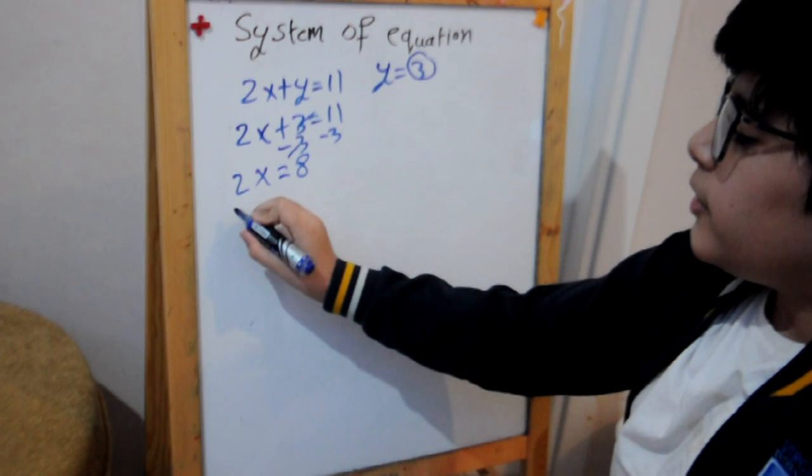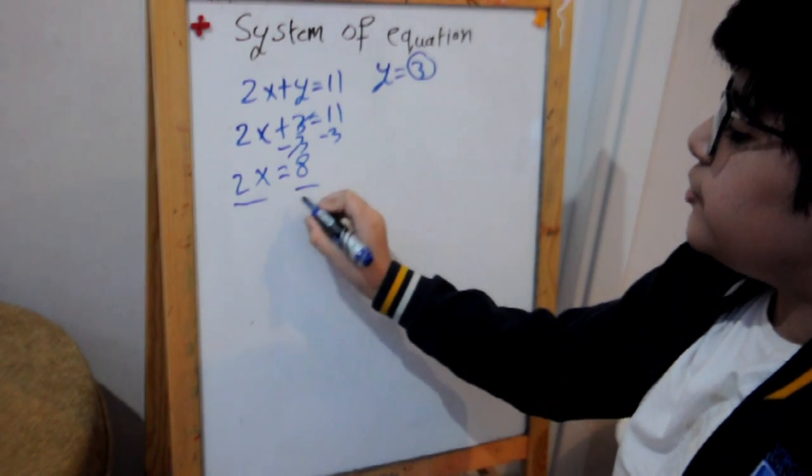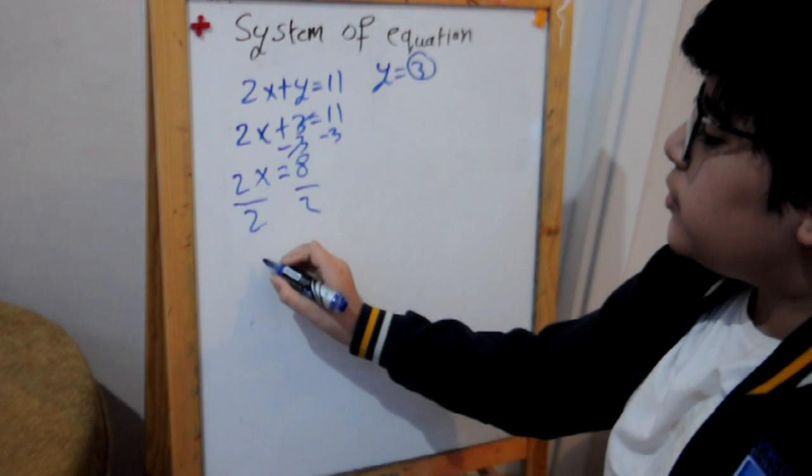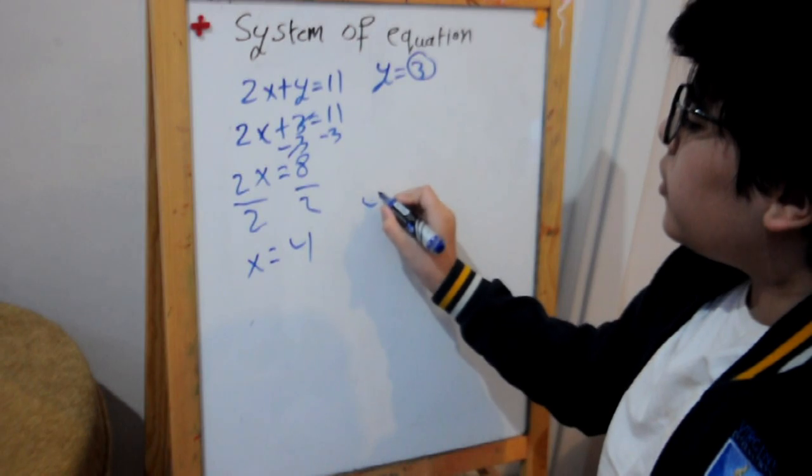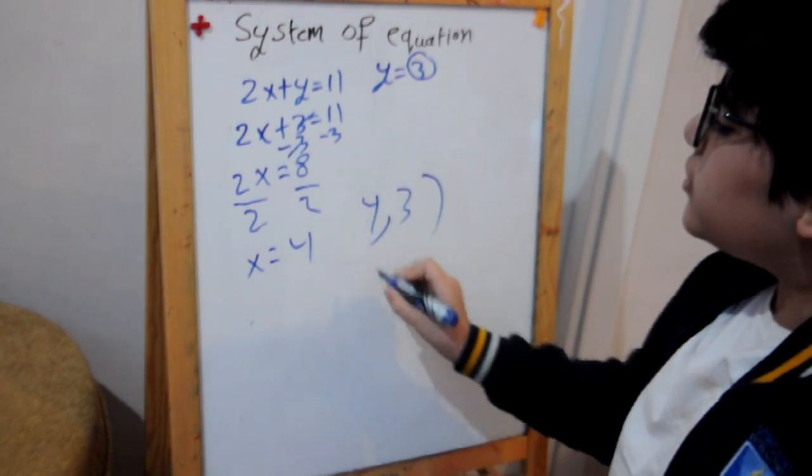Now you would divide both of these by 2, which means x will equal 4. The solution is 4 and 3.